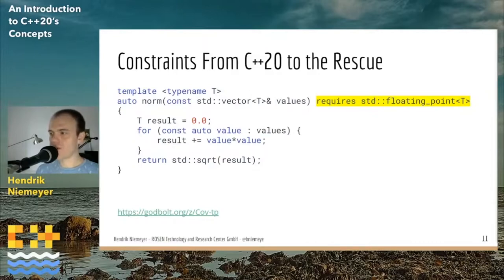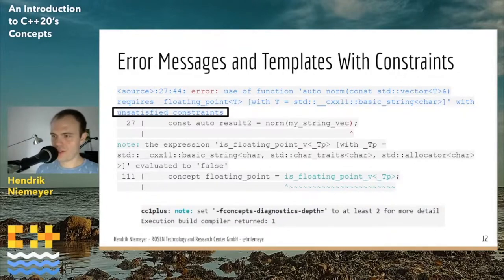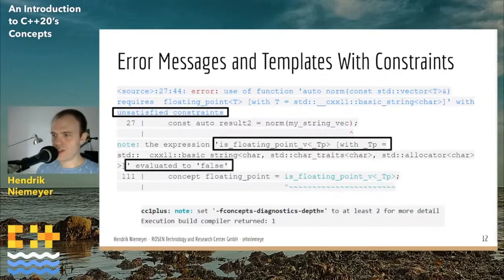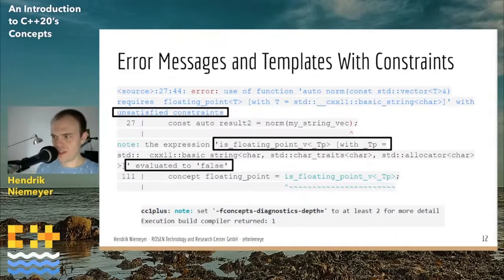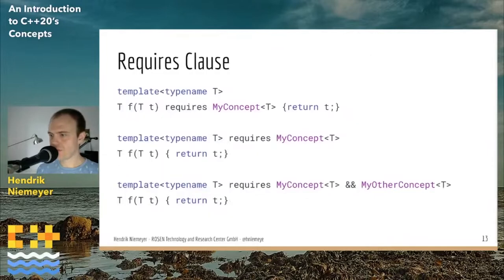Now let's look at the error message we get with concepts. It tells us there is an unsatisfied constraint, and further down it says 'is_floating_point_v evaluated to false' because std::floating_point uses is_floating_point_v under the hood, and inserting a string here evaluates to false. The level of detail of the error message in GCC can be controlled by the -fconcepts-diagnostics-depth flag, which is helpful for large and nested concepts.